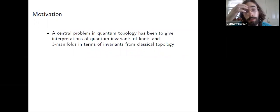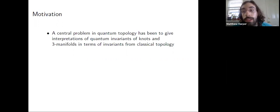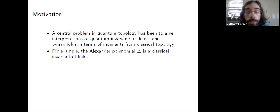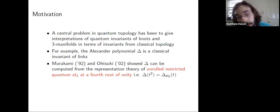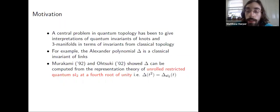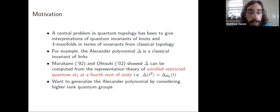The main problem in quantum topology has been about giving interpretations of quantum invariants in terms of classical topology. One of the examples of this is the Alexander polynomial, a well-known classical invariant. In 1992, Murakami reconstructed the Alexander polynomial using representations of unrolled restricted quantum SL2 at a fourth root of unity. It recovers the multivariable Alexander polynomial — specifically the Conway potential function — but for simplicity we'll say it gives you the Alexander polynomial in the variable t squared, single variable.